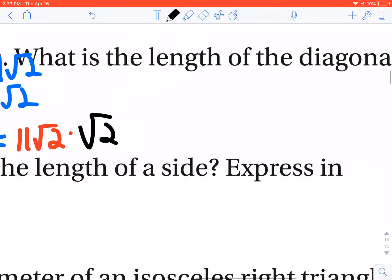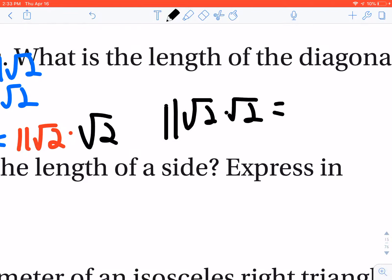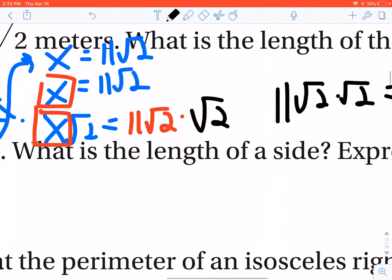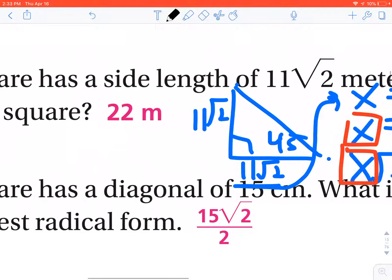You multiply whatever your leg is times radical 2. When I do that, the 11 doesn't change, and I have radical 2 times radical 2, which is simply just radical 4. So you have 11 times radical 4, but the square root of 4 is 2, and 11 times 2 is 22. That's how they got their answer for that one.